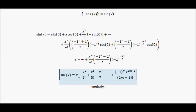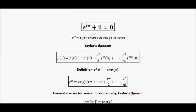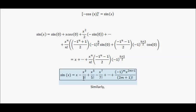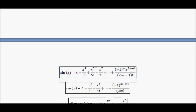The Maclaurin series of sine x is x minus x cubed over 3 factorial plus x to the 5 over 5 factorial minus x to the 7 over 7 factorial. The pluses and minuses alternate, and the power goes up by 2 each time.